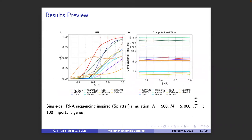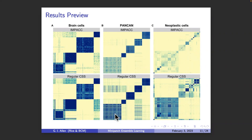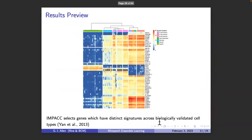This is a single-cell sequencing simulation specifically designed for single-cell data, and again our method in red shows superior clustering performance. Looking at consensus pictures: the top panel is our method IMPACT using mini patch clustering, the bottom is regular consensus clustering. On the Pan-Cancer dataset, there's a lot of confusion in regular consensus clustering between two clusters, but our method separates them quite well with a strong block diagonal structure, and also finds biologically relevant genes.